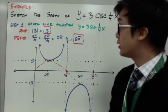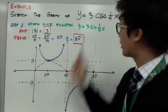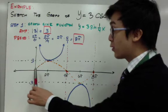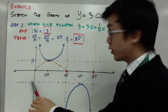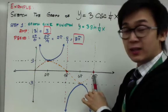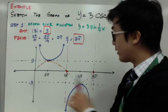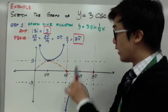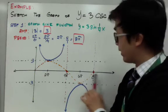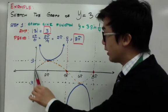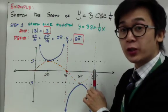Let's graph the sine function first, because that's what we need to start the cosecant function. You have an amplitude of 3, so you have 3 for your maximum and negative 3 for your minimum, and your period is 8 pi. Divide it into four equal parts: half of 8 pi is 4 pi, half of 4 pi is 2 pi. To find the third partition, add 2 pi and 4 pi to get 6 pi. So you have your four partitions and your graph of the sine function; now you need your asymptotes for the cosecant function.